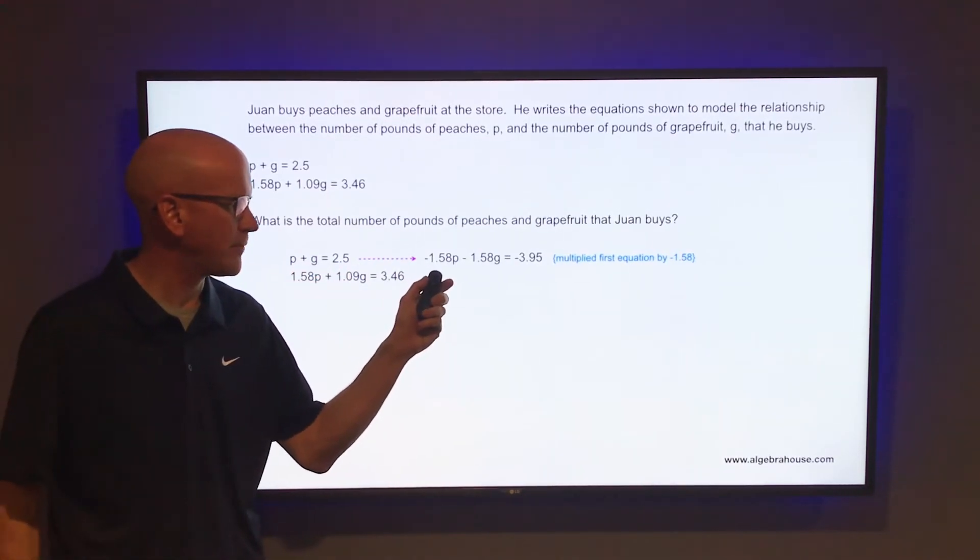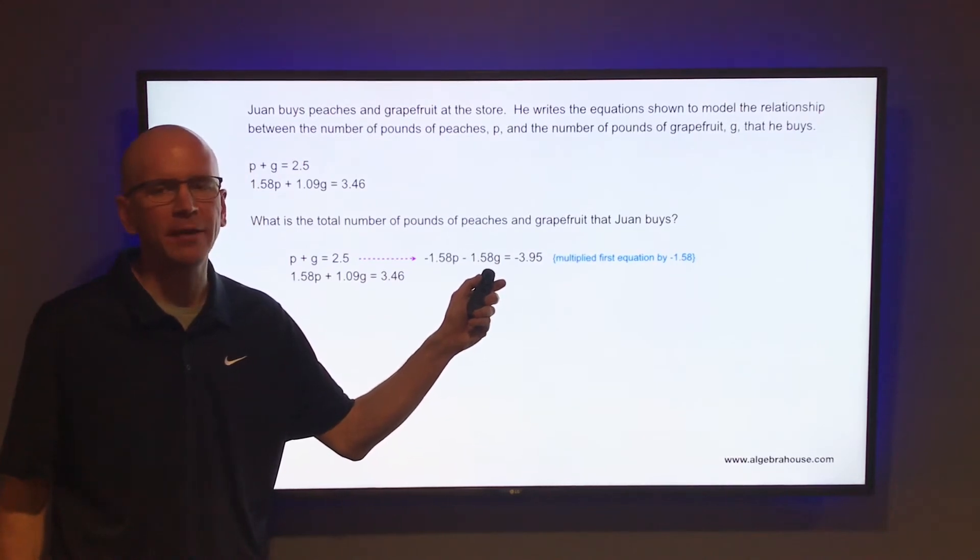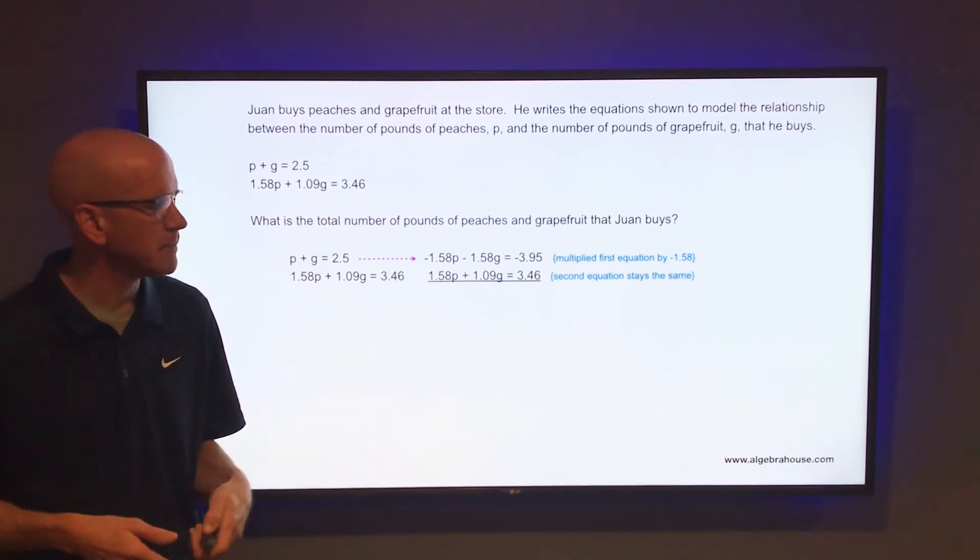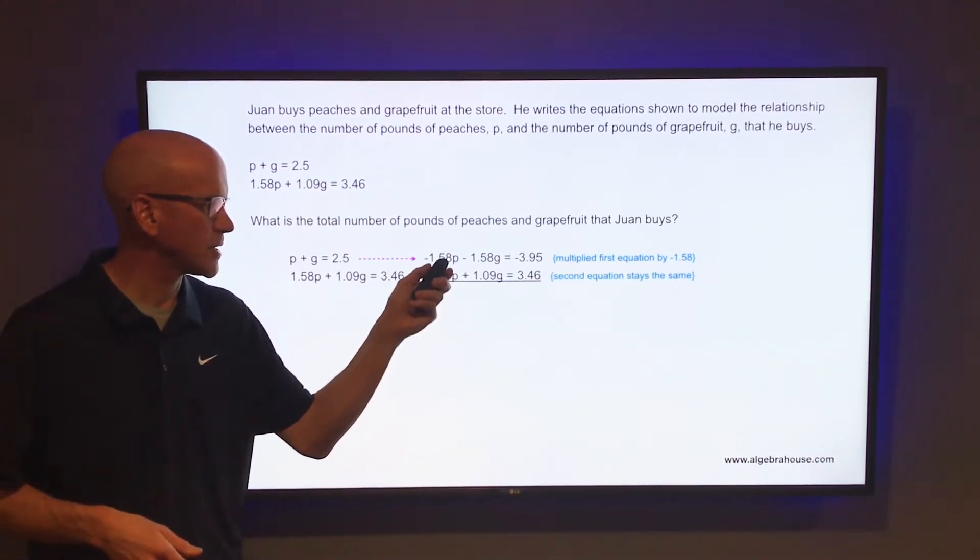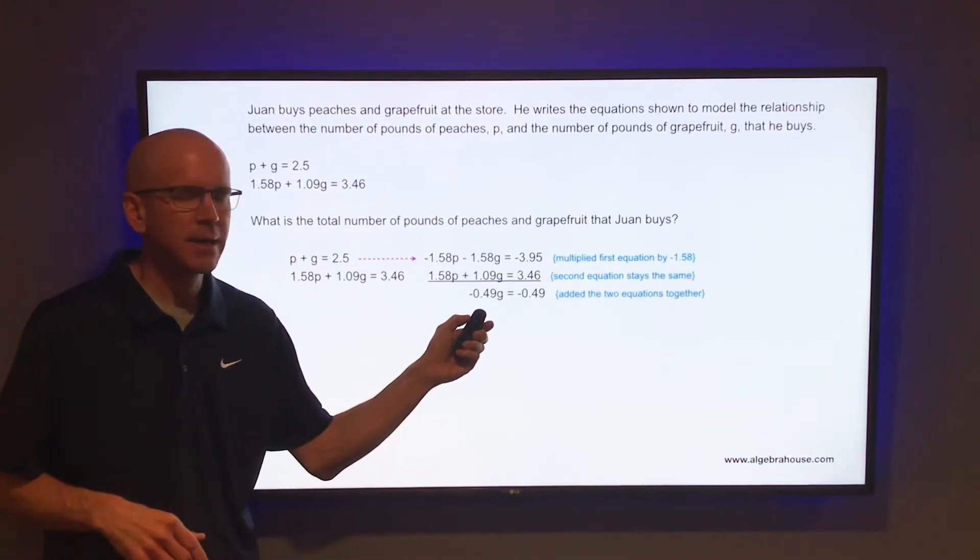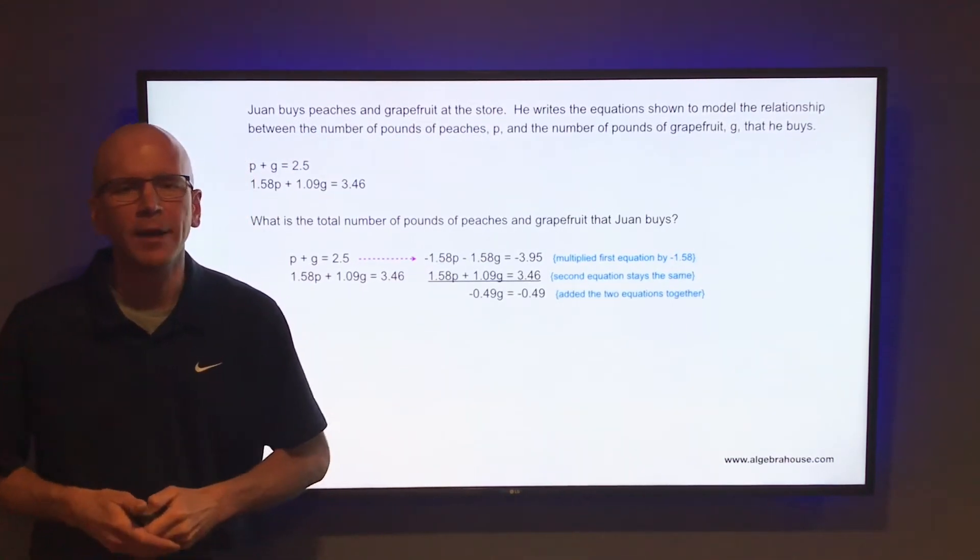If you do that, you get negative 1.58 P minus 1.58 G equals negative 3.95. The bottom equation will stay the same. Now when you add those two equations together, the P's will cancel. You get negative 0.49 G equals negative 0.49.